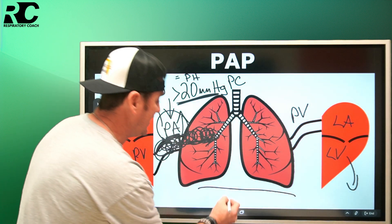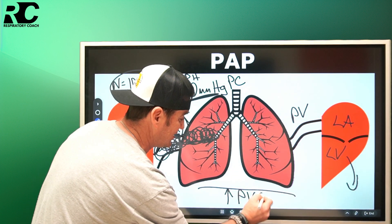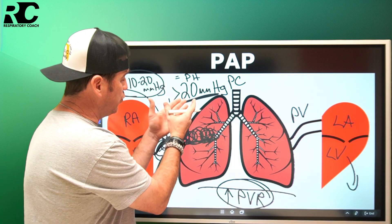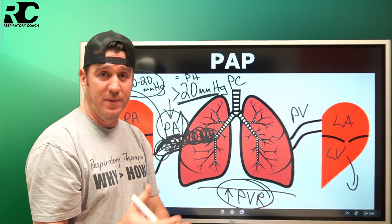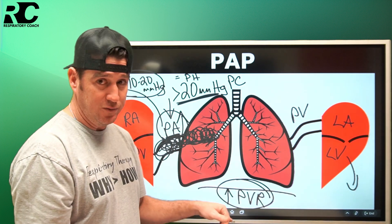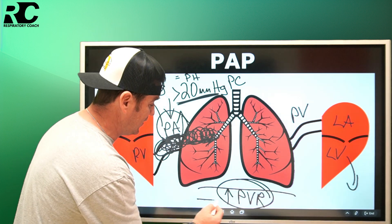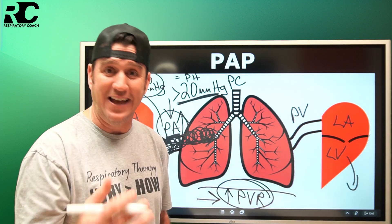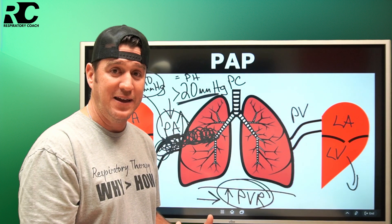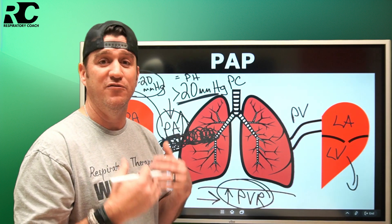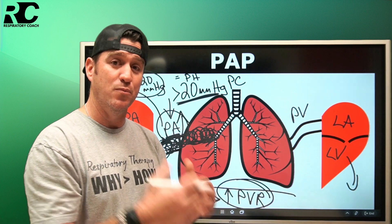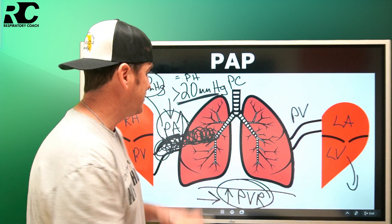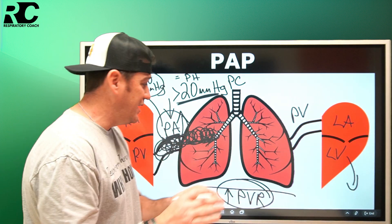If you take away one thing from this video, remember: greater than 20 mmHg equals pulmonary hypertension, due to a variety of causes that increase pulmonary vascular resistance. That's the takeaway — PVR, the resistance of pulmonary blood flow, puts more work on the right ventricle and elevates pressure within the pulmonary artery.